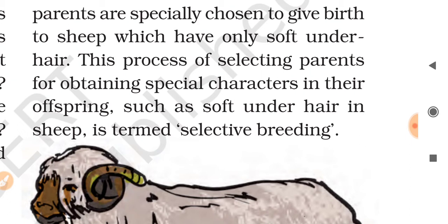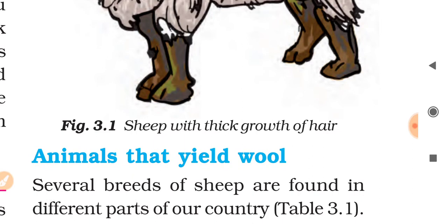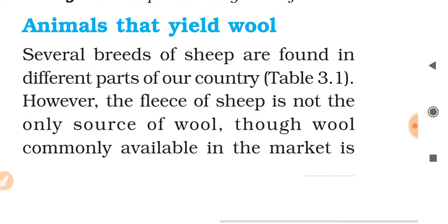So, to select sheep that have only soft under-hair and not coarse hair like in their beard — that is what selective breeding means. You should understand and remember this term.